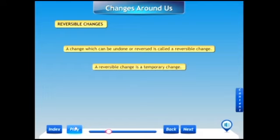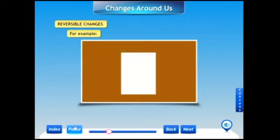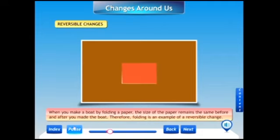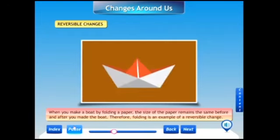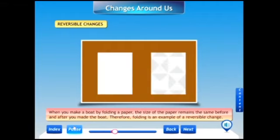For example, when you make a boat by folding a paper, the size of the paper remains the same before and after you make a boat. Therefore, folding is an example of a reversible change.